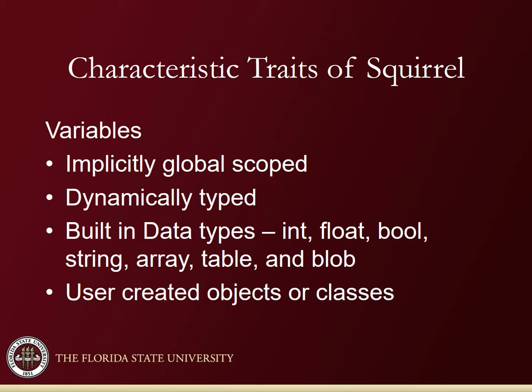In Squirrel, variables are implicitly globally scoped; they have to be explicitly defined as local to be locally scoped. The variables are dynamically typed. There are seven built-in data types: int, float, bool, string, array, table, and blob. There are also user-created objects or classes.